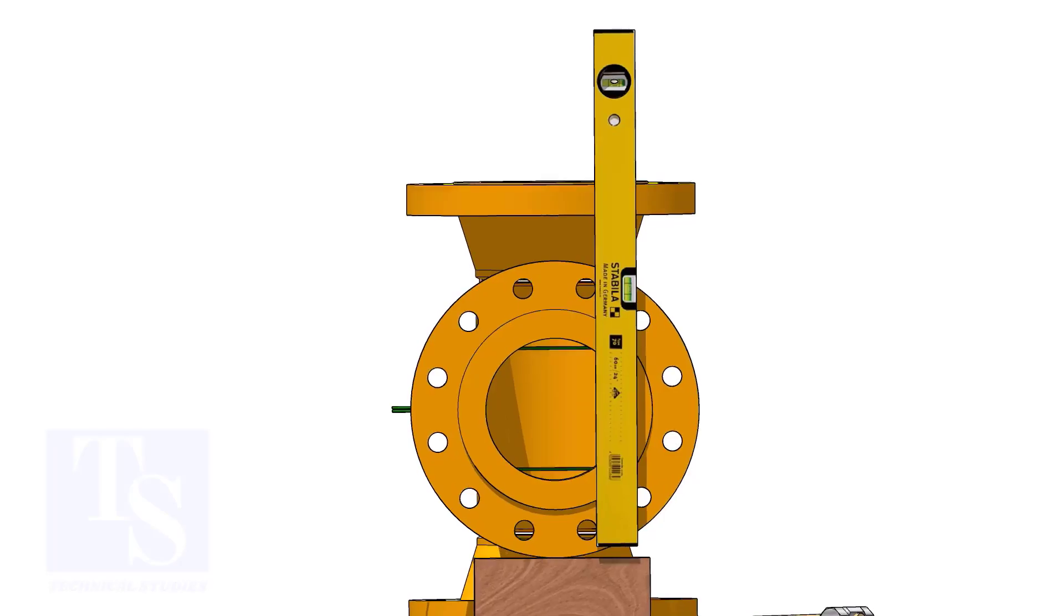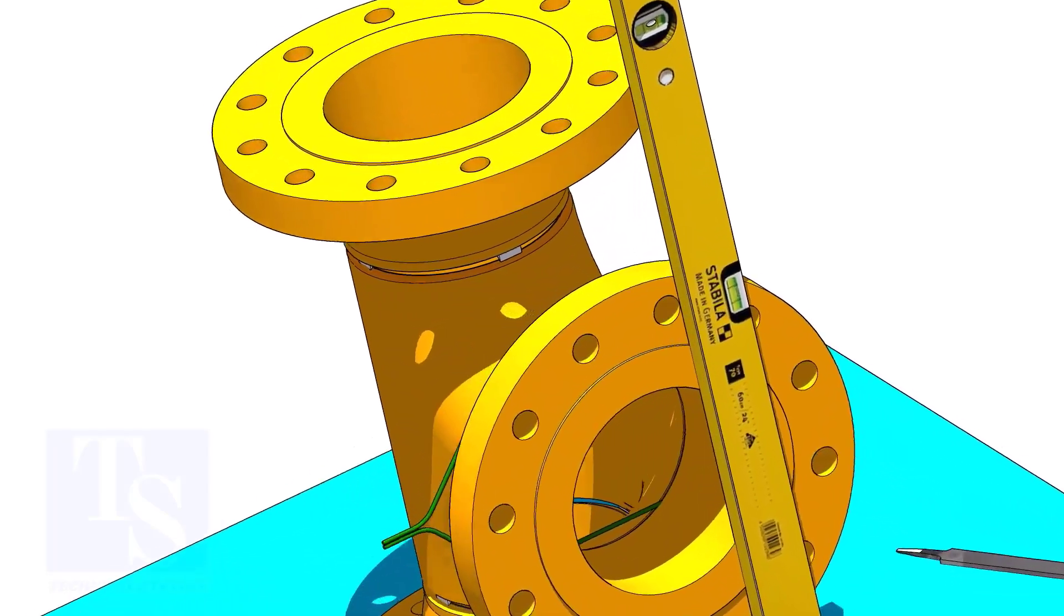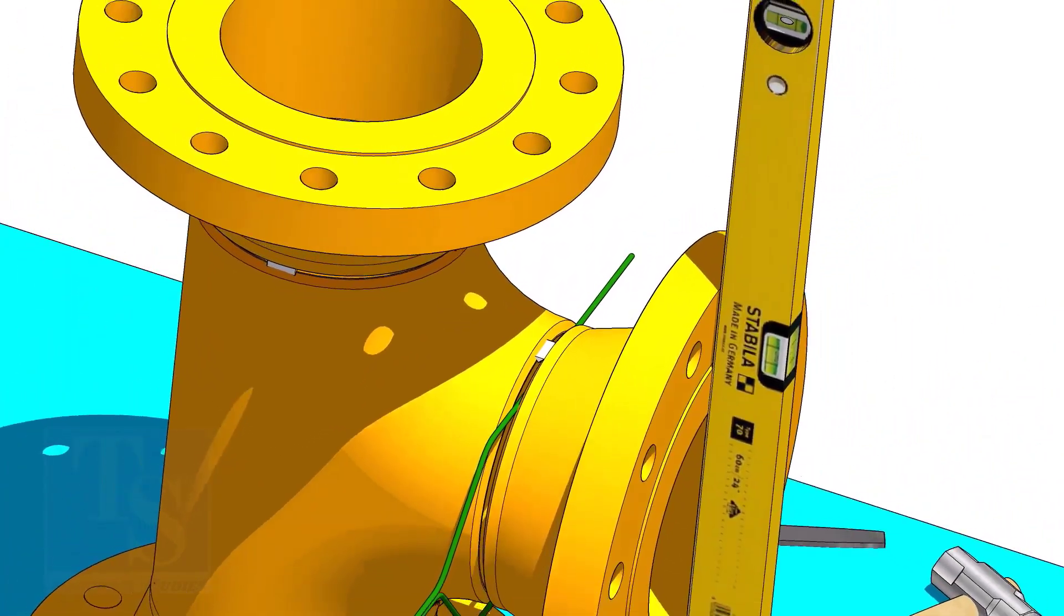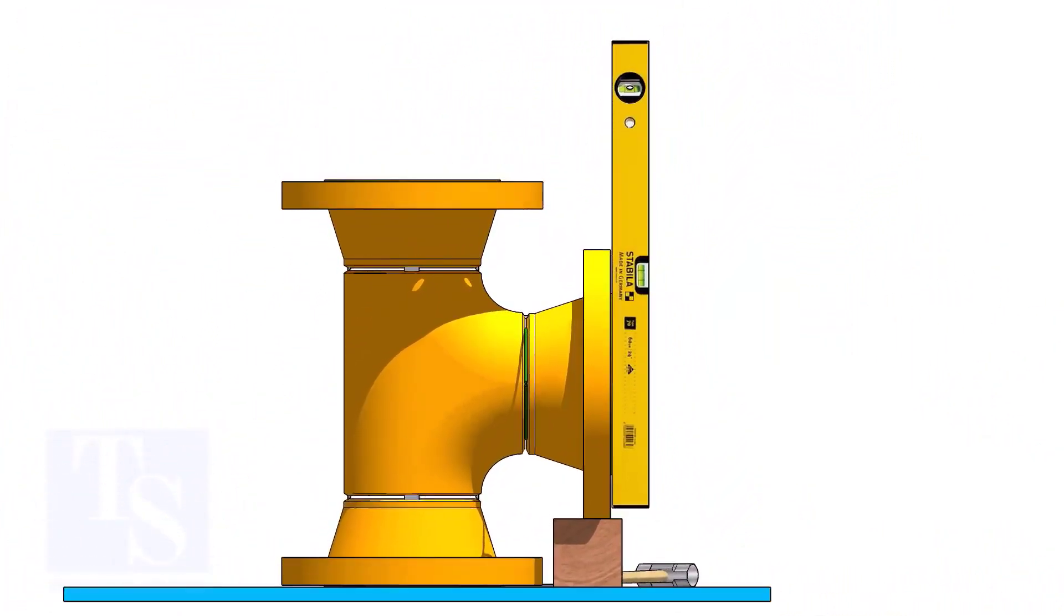Correct the plumbness of the flange holes, as shown. Tack weld on the top side. Correct the flange vertically, and tack weld below.